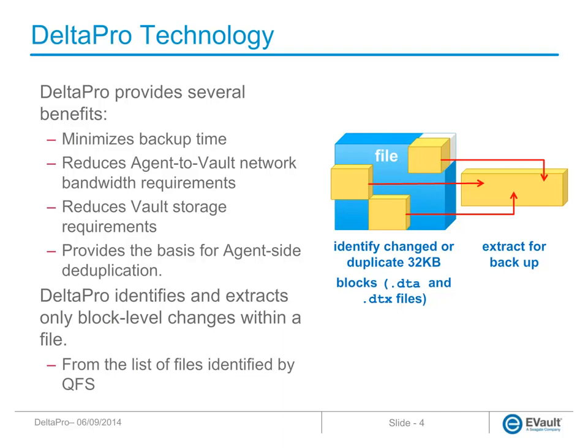Delta Pro Technology reduces backup time and minimizes the amount of data to transfer over the network and store on a vault. It is also the basis for agent-side deduplication. The first backup of any new file is called a seed backup and contains every block of the file. Subsequent backups are called delta backups and consist of only the deltas, or changes, since the last backup. Delta Pro Technology quickly finds block-level changes within the list of changed files identified by QFS, and eVault only backs up these small block-level changes as opposed to the whole file.